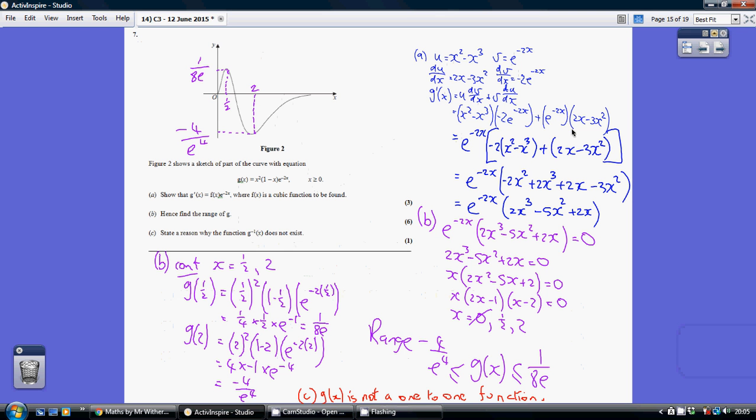We can factorize by taking out e to the minus 2x, which we're encouraged to do by what we're having to show. Taking that out, we're left with this, and tidying up the bracket, we get this. We've shown that it's this, where f(x) is a cubic function. That bit there in the bracket is a cubic function.